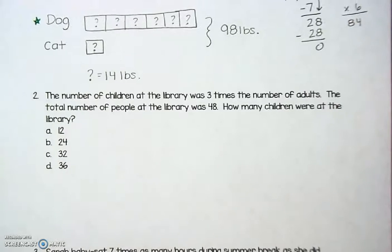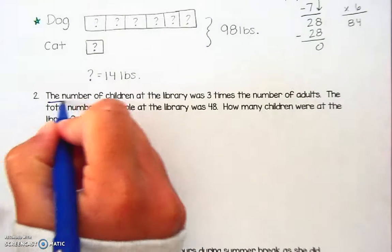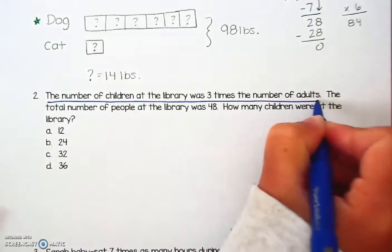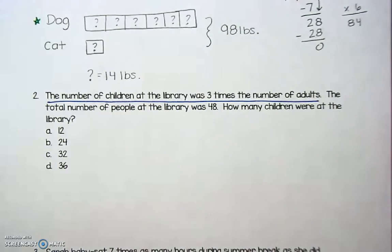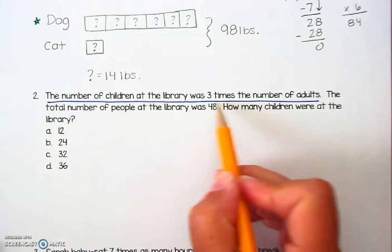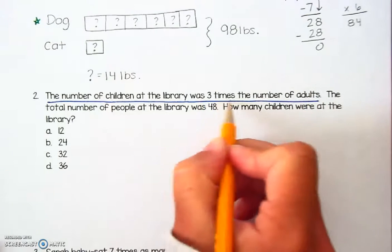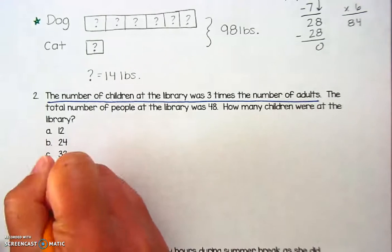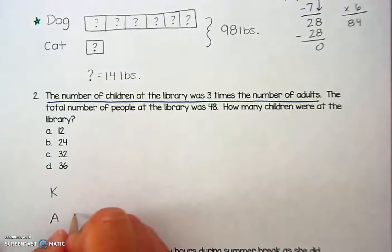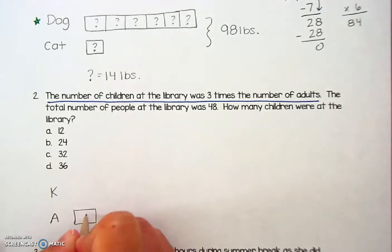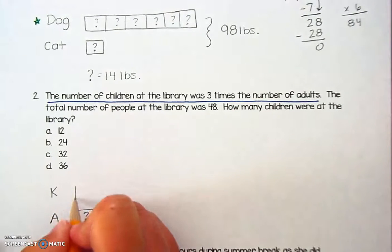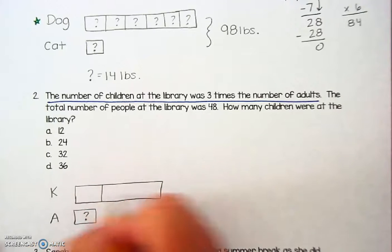Let's take a look at another example. This one says the number of children at the library was three times the number of adults. The total number of people at the library was 48. How many children were at the library? Let's go line by line. I can picture all these people at the library. Again, I see a comparison — I don't know how many kids there were, I don't know how many adults there were, but I do know there were three times as many kids as adults. So I'm going to make a group for the kids and a group for the adults. Since there were fewer adults, that gets one group of a mystery number. And there were three times as many kids, so that's going to get three groups of a mystery number.